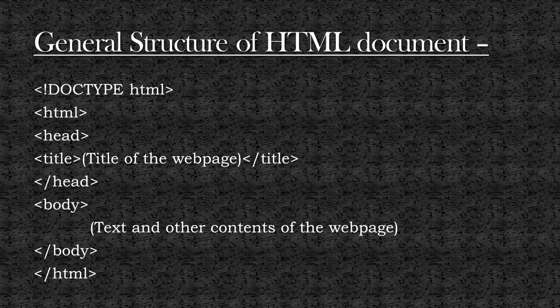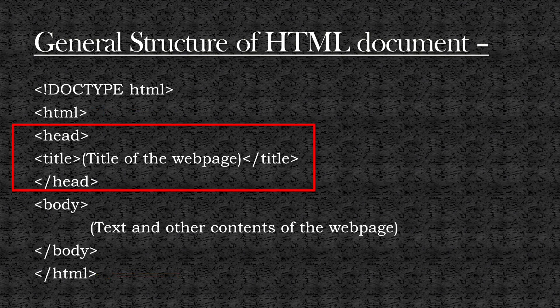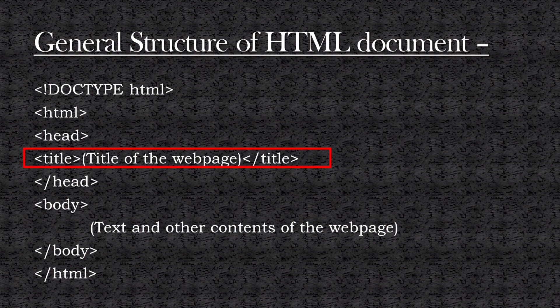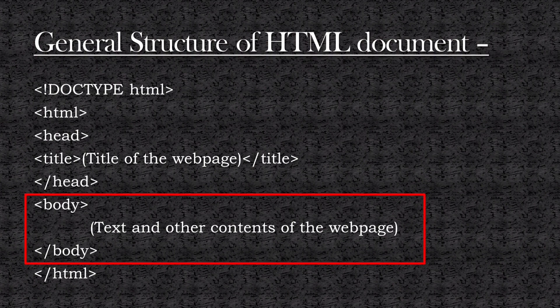This is the general structure of an HTML document. As you can see, the first line is the Doctype declaration, and all the HTML contents are enclosed within the HTML tag. Then there is the head tag. The head tag contains metadata like document title and other specific information about the web page that is not displayed to the user. Metadata provides browsers and search engines with technical information about the web page. Next is the title tag, which is used to give a title to your web page. And then there is the body tag, which includes the text and other contents of the web page.